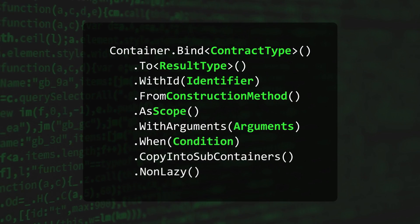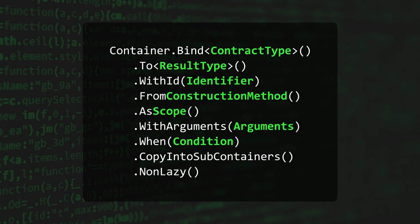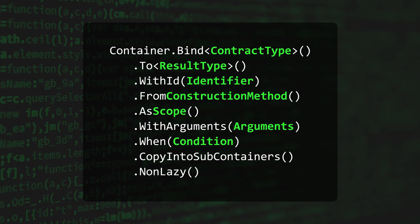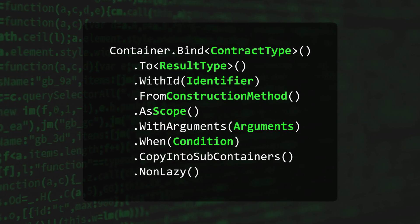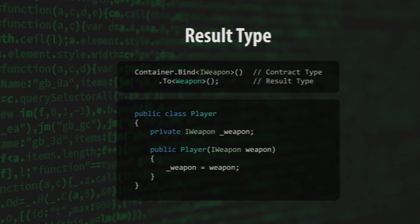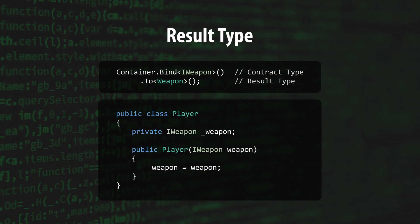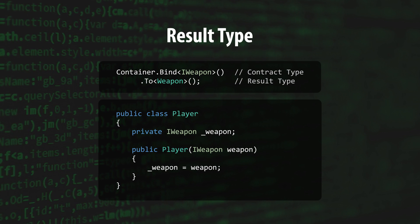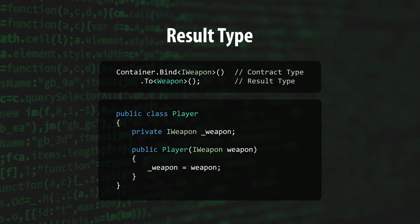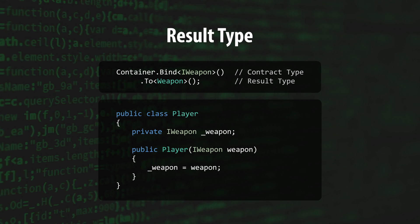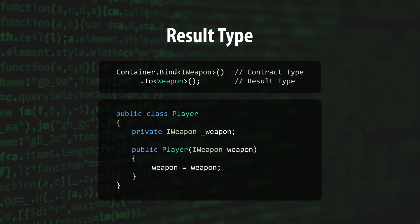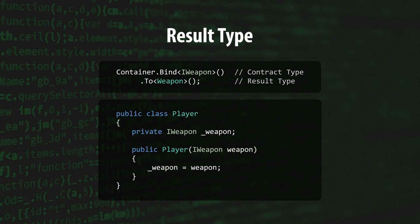For more complicated binding scenarios, Zenject provides a number of options that let you fine-tune the binding process. Each option has a logical default, so you don't have to call them all for every binding statement. The To method uses ResultType to tell the container which implementation of the contract type to create and inject. Its default value is equal to the contract type, so you don't need to call this method if you aren't specifying a subclass of contract type. ResultType must, however, be a type that is equal to or derives from the contract type.